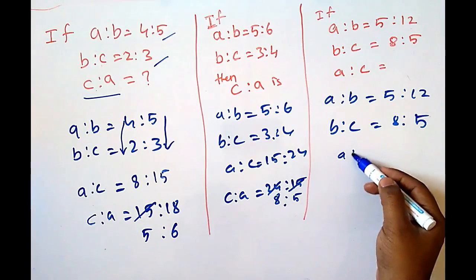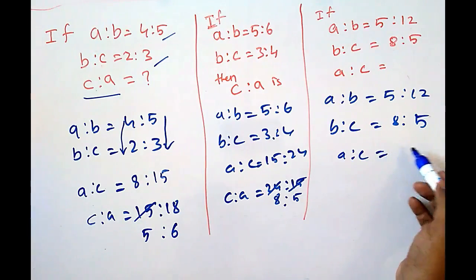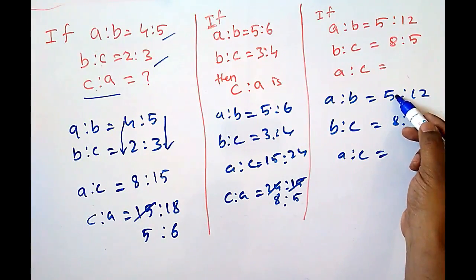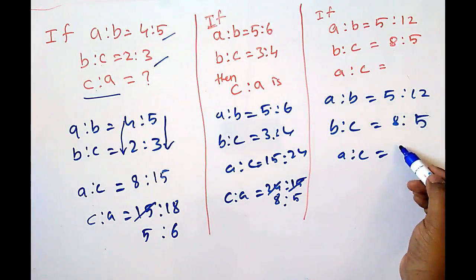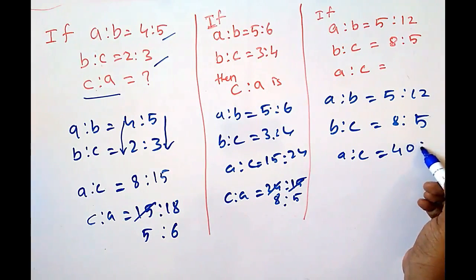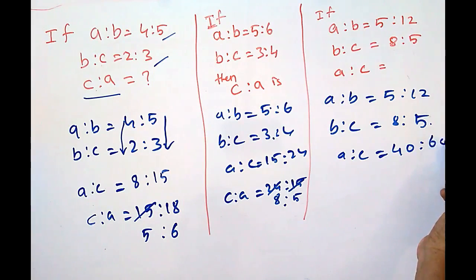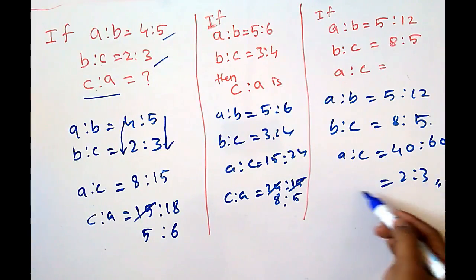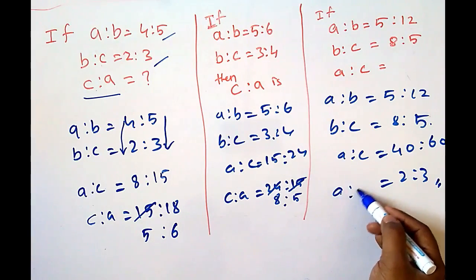We have to find A to C. A to C is given by 5×8 = 40 to 12×5 = 60. This simplifies to a ratio of 2 is to 3.